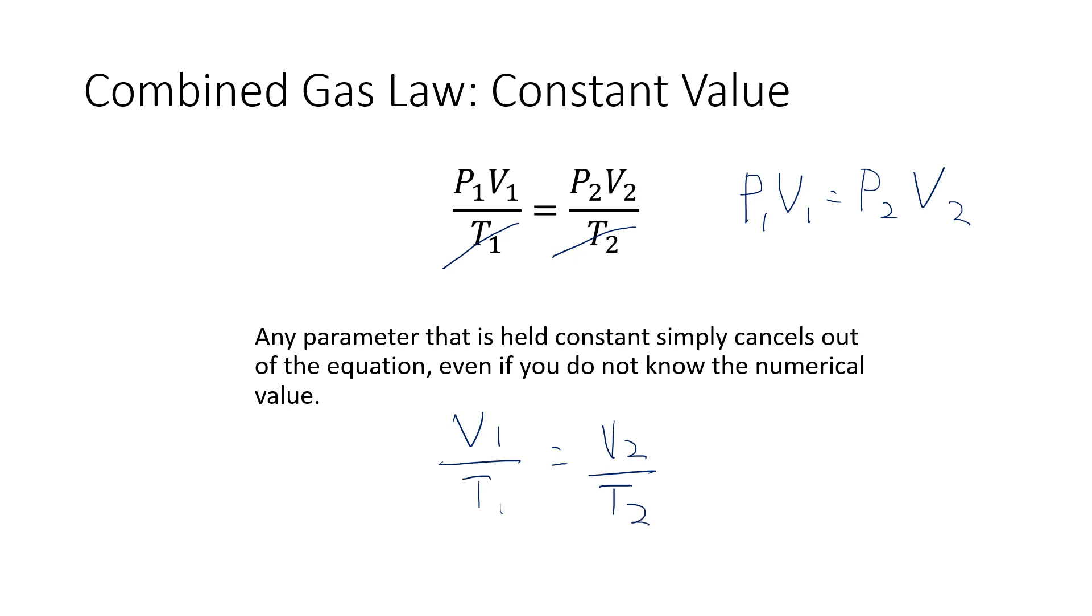And let's say instead that the volume is held constant, then the volumes divide out, and we're left with P1 over T1 is equal to P2 over T2.